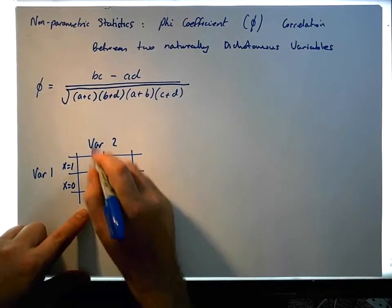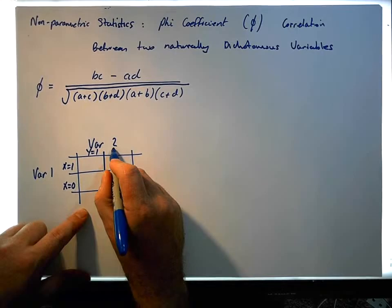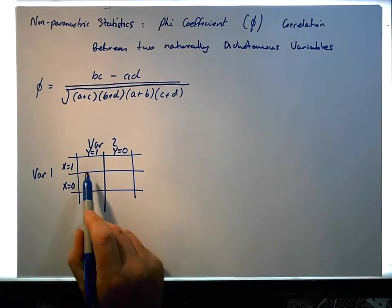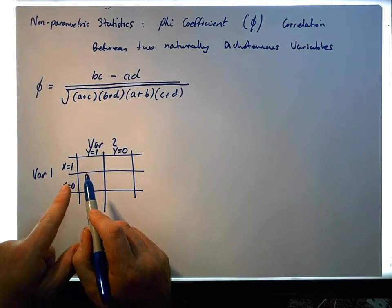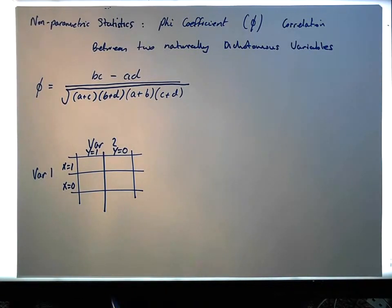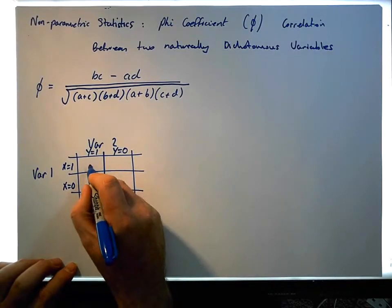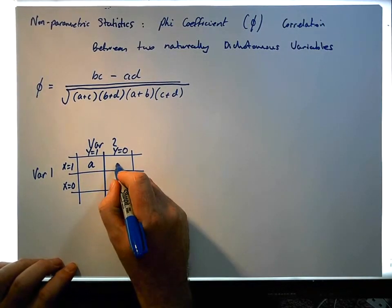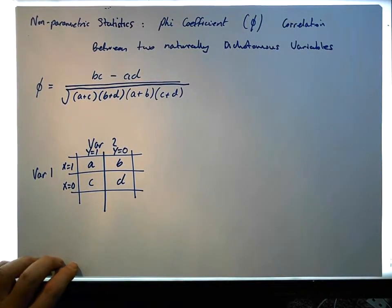This column represents when var2 takes on a value of one, and the other when it takes on a value of zero. So we end up with four cells representing the pairwise possibilities of levels associated with both dichotomous variables. We label these cells A, B, C, and D.